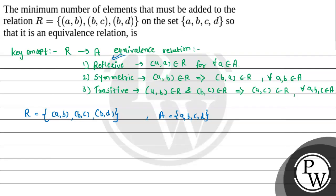For the first condition — reflexive — we need to add the order pairs (a,a), (b,b), (c,c), and (d,d), since none of these are present in the given relation.